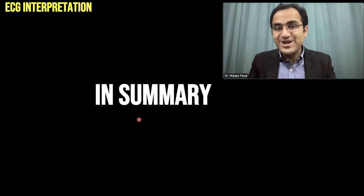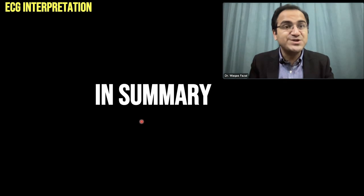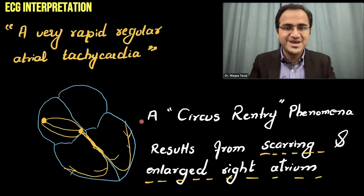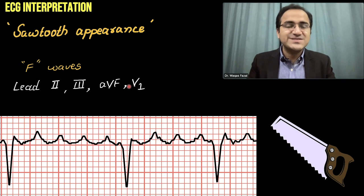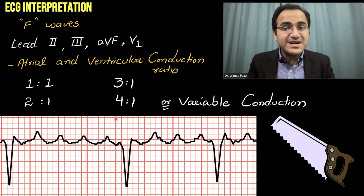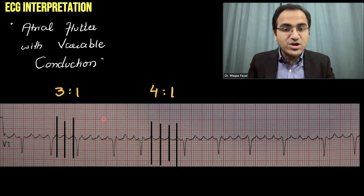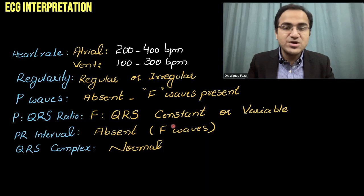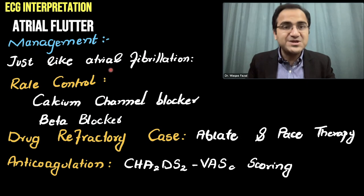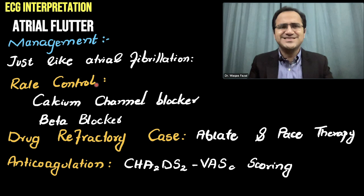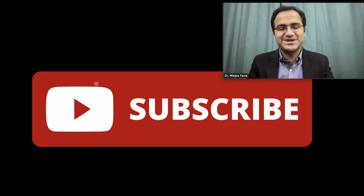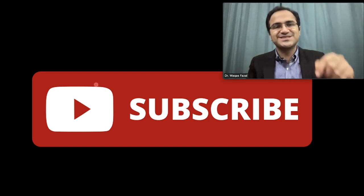In this video we talked about what atrial flutter is, the circus re-entry phenomenon, the sawtooth appearance, F waves, causes of atrial flutter, variable conduction, conduction ratios and how to determine them by drawing lines through the peaks, the characteristics of atrial flutter, symptoms, management, and we practiced multiple ECGs. Please click subscribe and check out the other videos on ECG interpretation made easy.